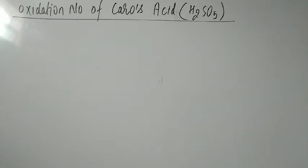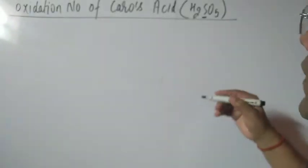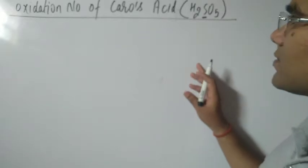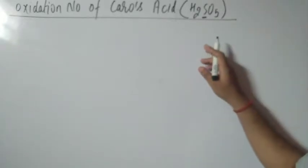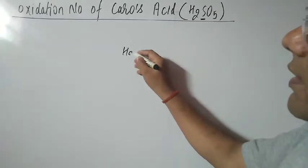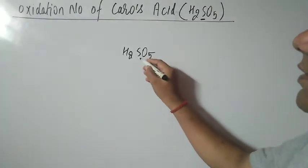Hello students, let us see one question students are asking: the oxidation number of sulfur in Caro's acid, whose formula is H₂SO₅. The key point in these questions is that this is an exceptional oxidation number.